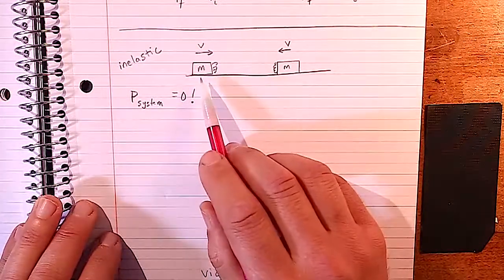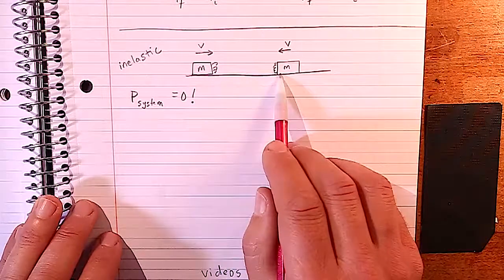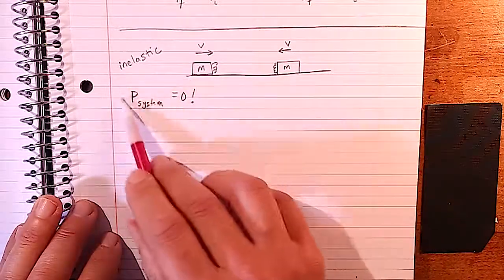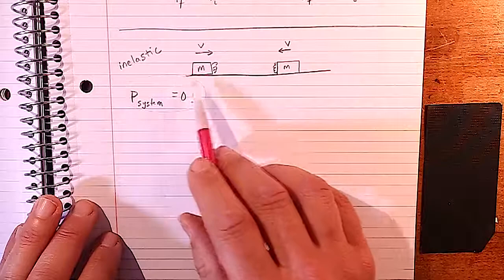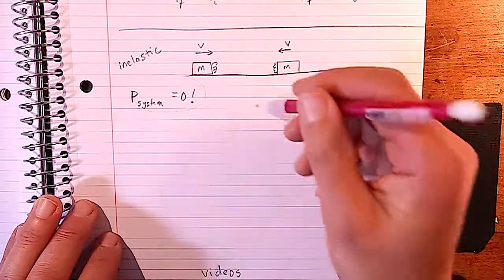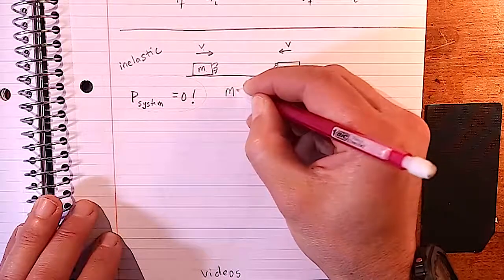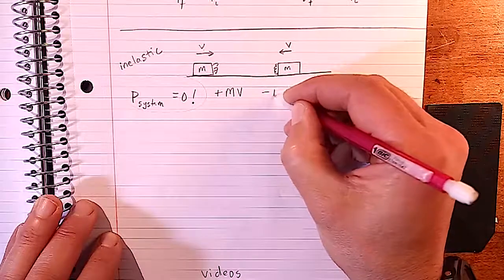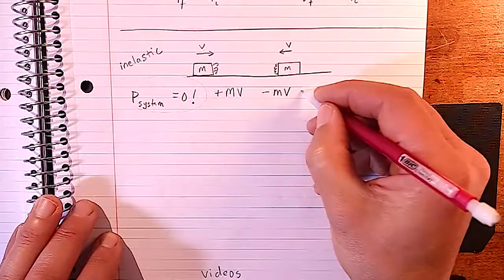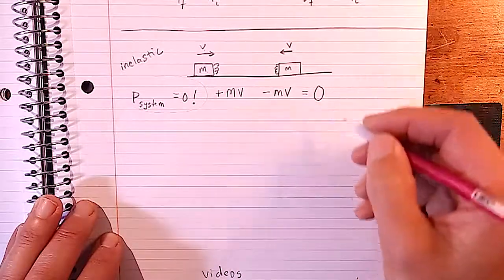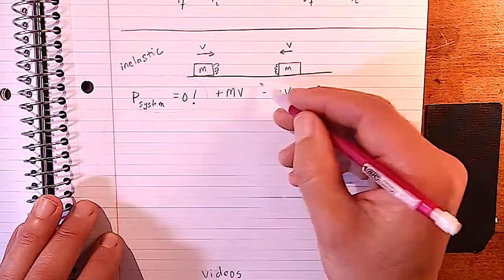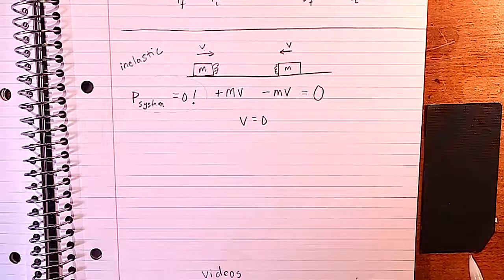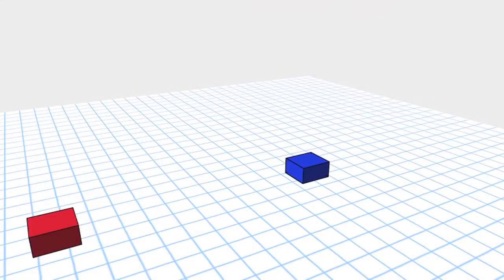Fourth scenario: two blocks with velcro (perfectly inelastic) approaching each other with the same mass and same speed but in opposite directions. The momentum of the first is +mv and the second is −mv, giving a total system momentum of zero. So when they collide, their final velocity will be zero — they stop.